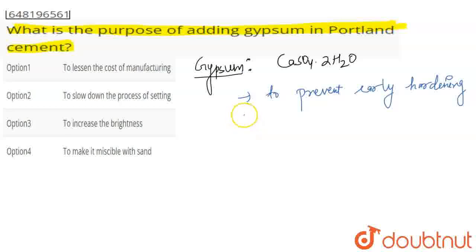If I talk about it again, gypsum basically slows down the setting of cement, slow down the setting of cement.